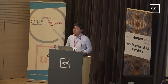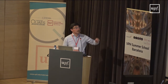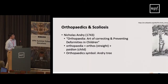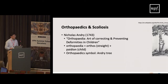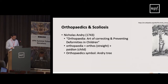Orthopedics is actually a relatively new term. It was coined in the 18th century by Nicolas Andri, who came up with the word 'orthopedia' — the art of correcting and preventing deformities in children. It comes from 'orthos' meaning to straighten and 'pedion' meaning child. The symbol of orthopedics is called the Andri tree — the idea being that by attaching a crooked tree to something straight, you can straighten the trunk.